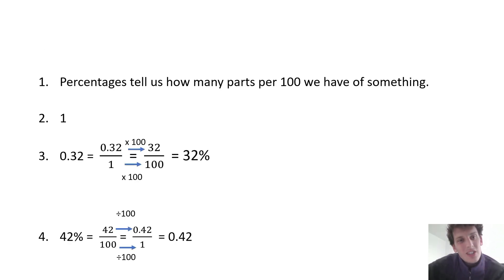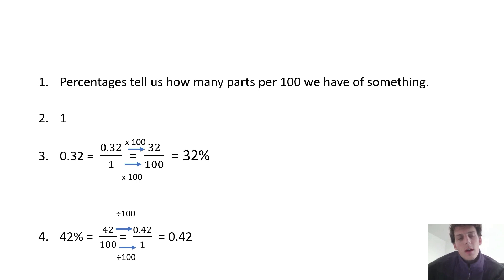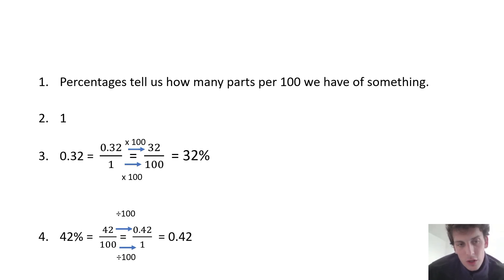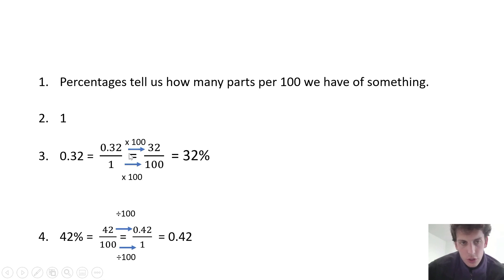Welcome back. So what does a percentage tell us? It tells us how many parts per hundred we have of something — that's a good definition, please use it. What are decimals out of? Decimals are out of one. What is 0.32 as a percentage? Remember, percentage means out of a hundred, and decimals are out of one. So we need to make our decimal out of a hundred. To get from one to a hundred, I times by a hundred — whatever I do to the bottom I have to do to the top. So 0.32 times a hundred is 32%, which is our answer.